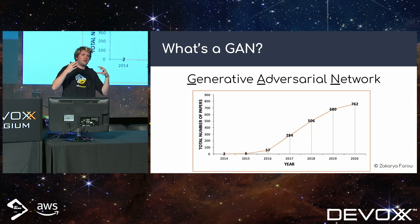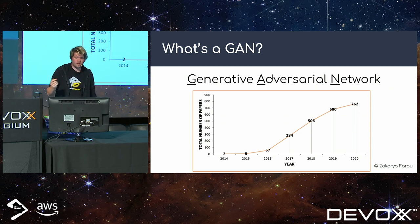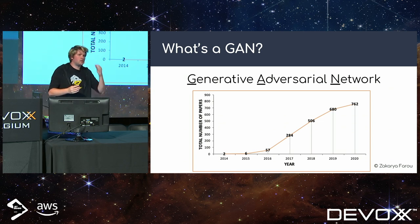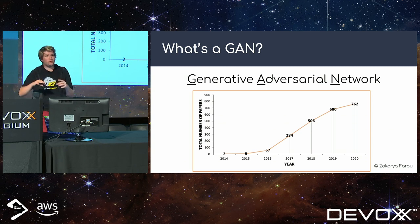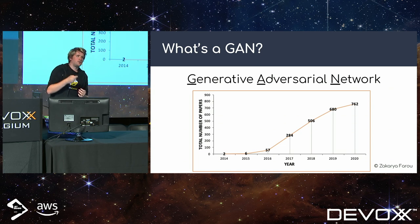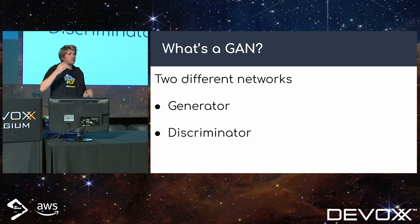GANs are a specific type of neural network invented later — the first paper came out in 2014. They've been a very trendy topic since, used for applications related to generating content: generating faces, and more recently things like DALL-E and stable diffusion (though those are guided diffusion models, transitioning away from GANs). GANs are pretty easy to understand — we have two networks: the generator and the discriminator, which have very specific roles and are trained together.